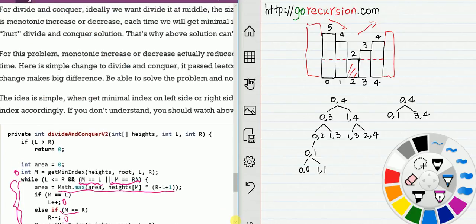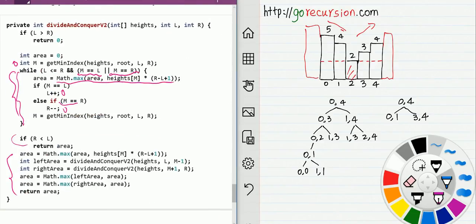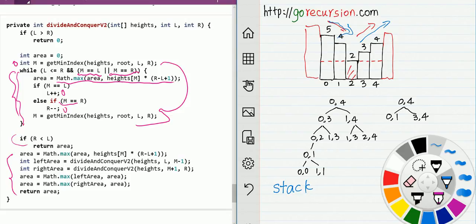If you submit this version to the online judge it will pass. As you can see, this simple change makes a big difference. If you search online for this problem you will find a stack-based solution — that stack solution actually comes from this same idea. If the input is increasing or decreasing, you can utilize that property to optimize the problem. This has been our introduction from recursion to divide and conquer. Thank you for watching, and check my blog for more information.